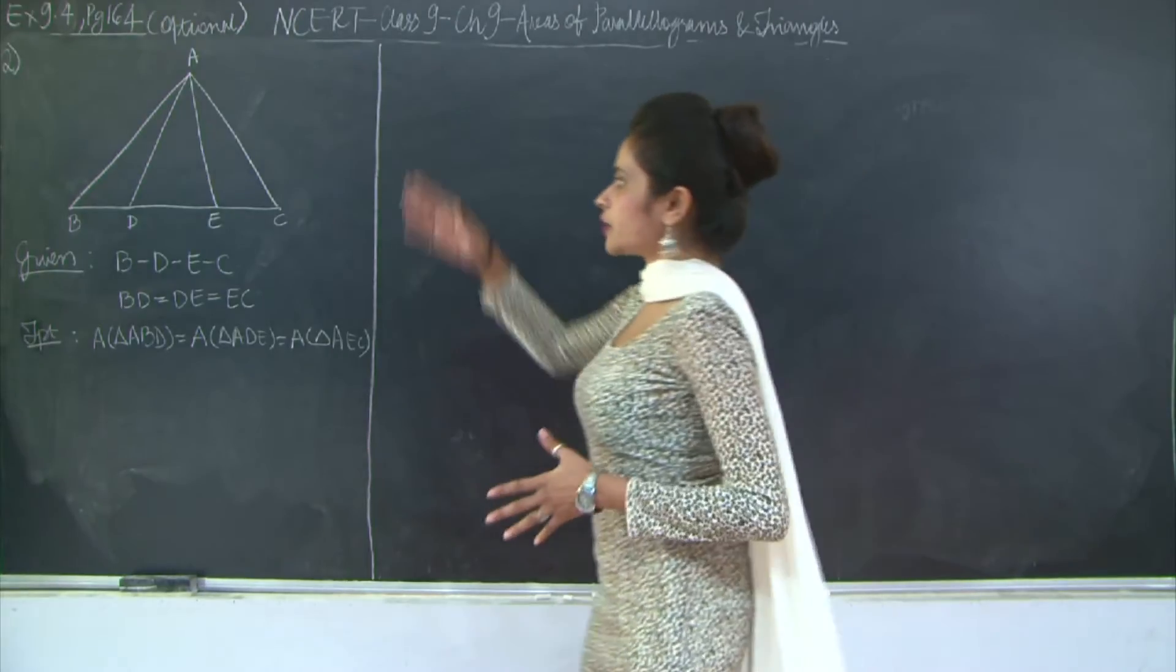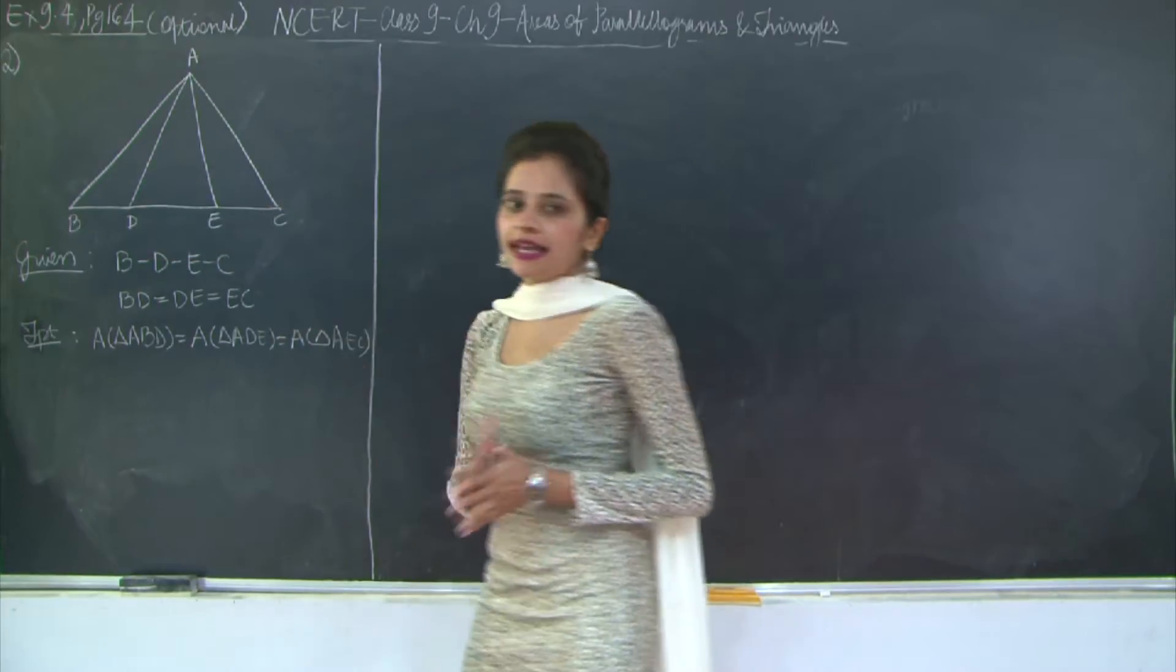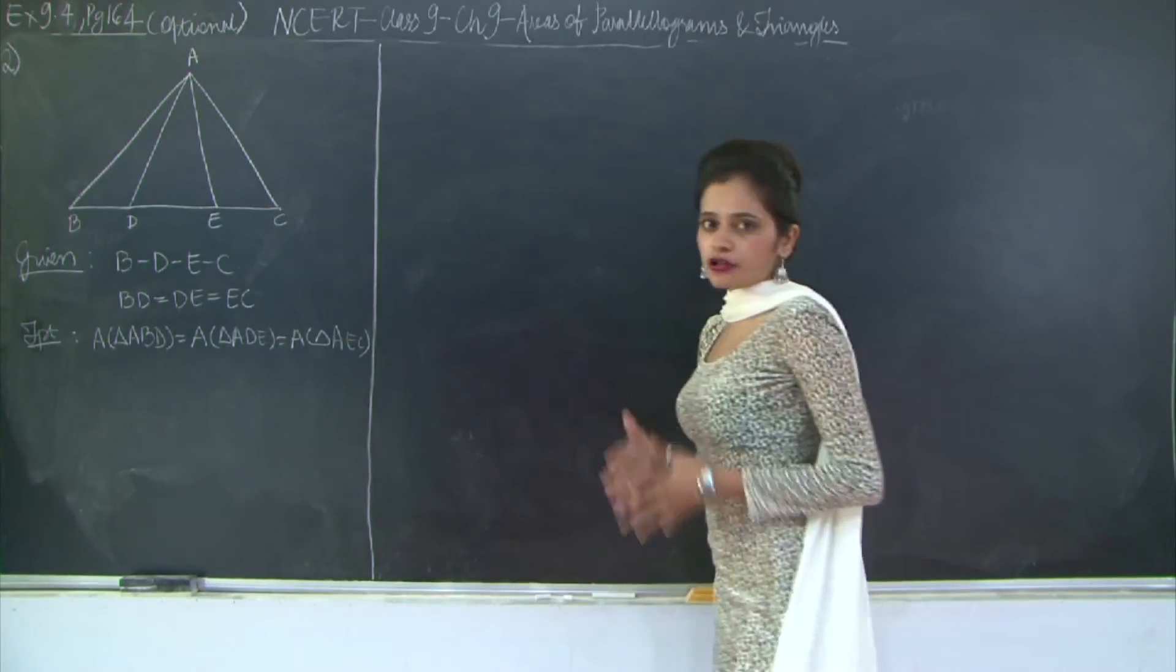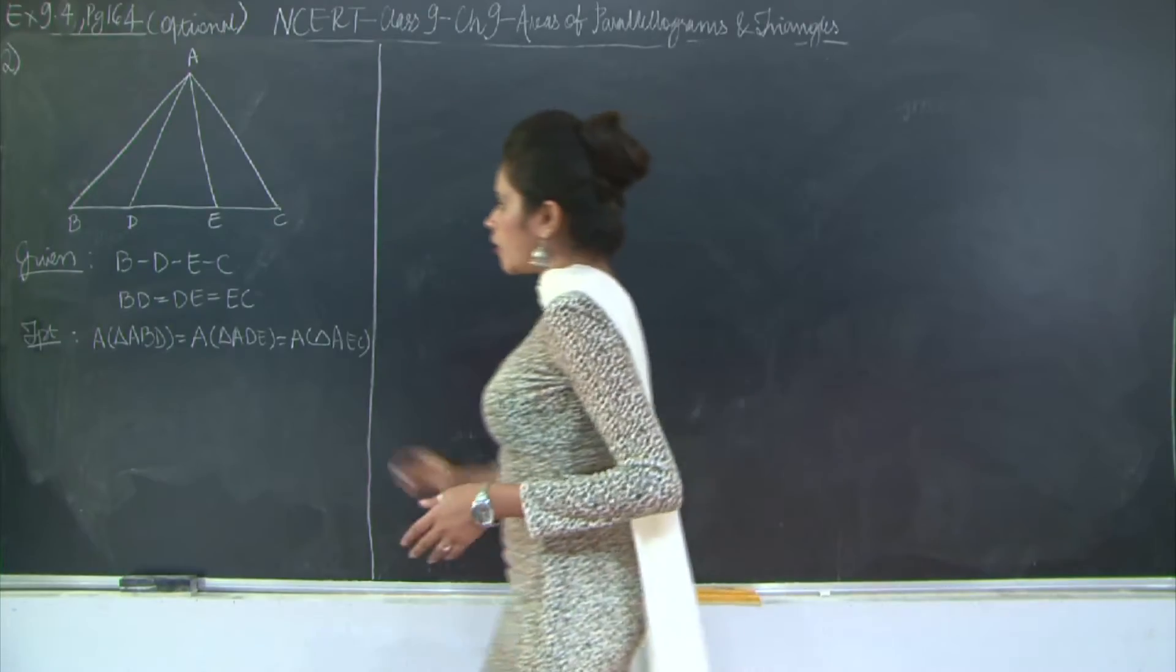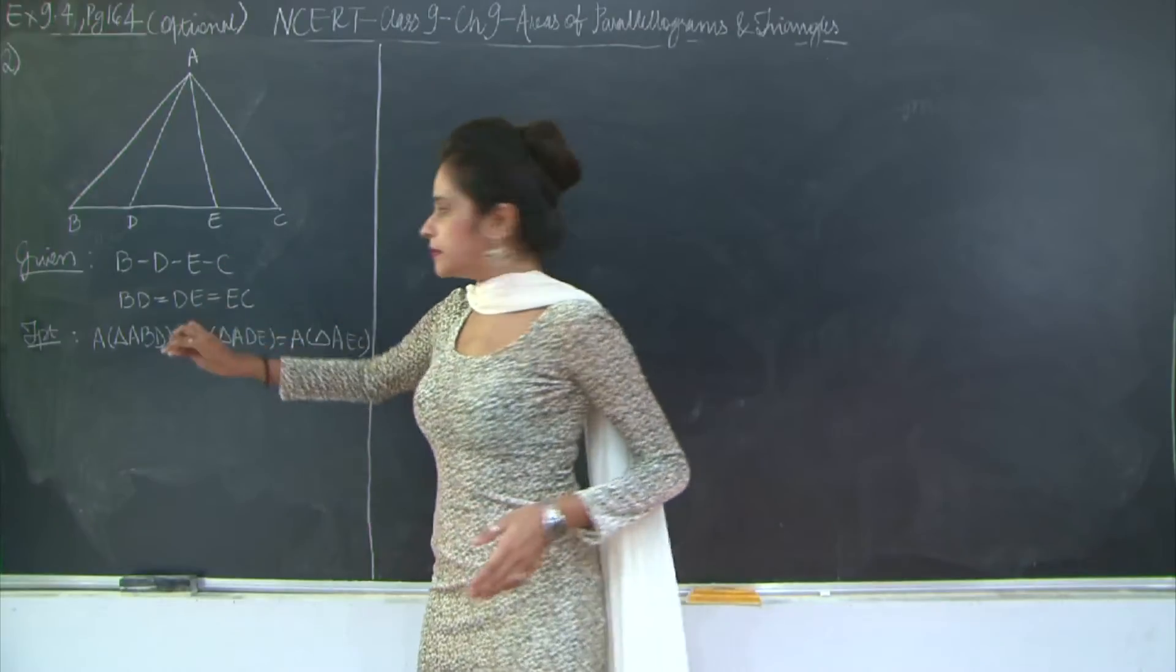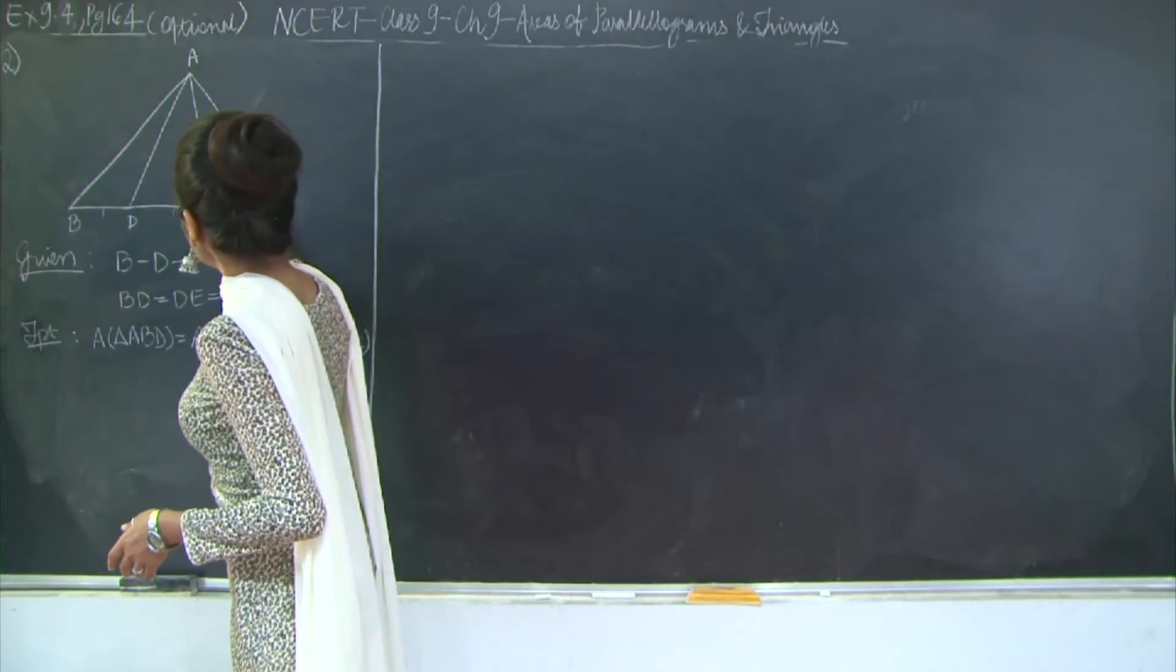Here we have triangle ABC such that points B, D, E and C lie on the same line which is also the base of your triangle ABC. These points are placed such that BD is equal to DE is equal to EC, so these line segments are equal.